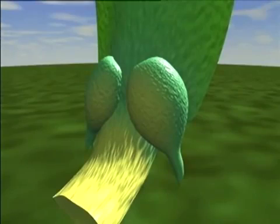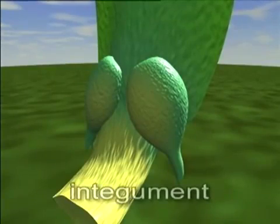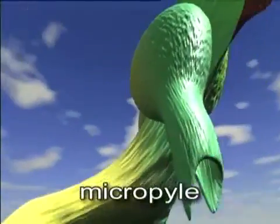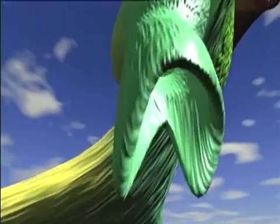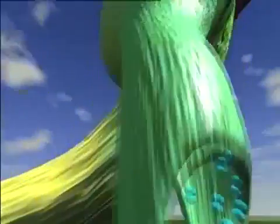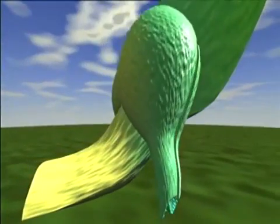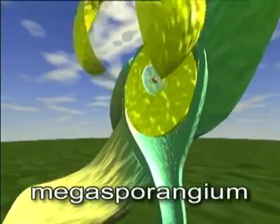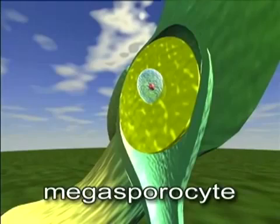Each ovule has an outer protective layer or integument. An opening in the integument, the micropyle, consists of a canal that terminates in two micropilar arms, each covered with a sticky secretion. Beneath the integument, there is a fleshy megasporangium containing a diploid megasporocyte cell.